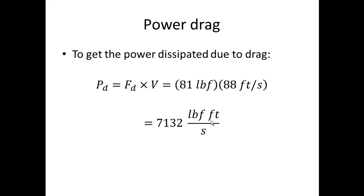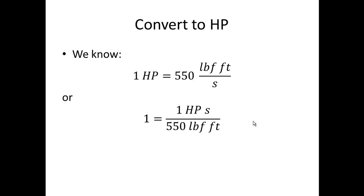Now looking at the power drag, let's look at the power dissipated due to drag. So we take the drag force and multiply by the vehicle velocity. We have 81 times 88 and that will give us 7132. And then we have for units we'd have pound force feet per second. This is not a popular unit for power.